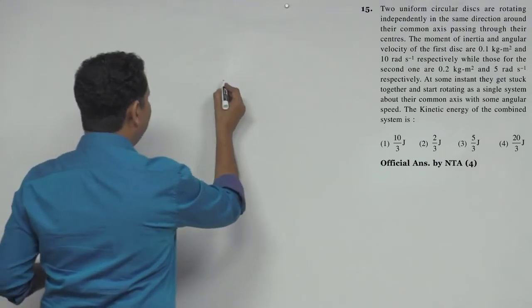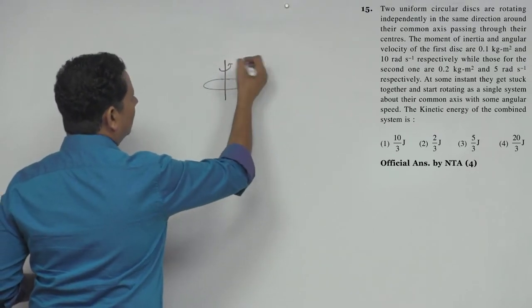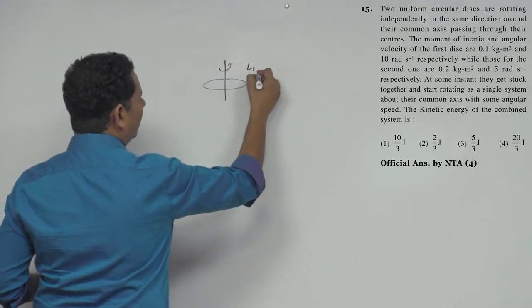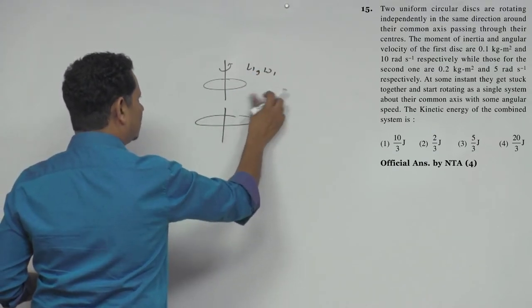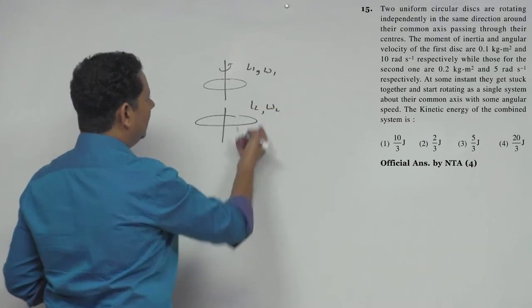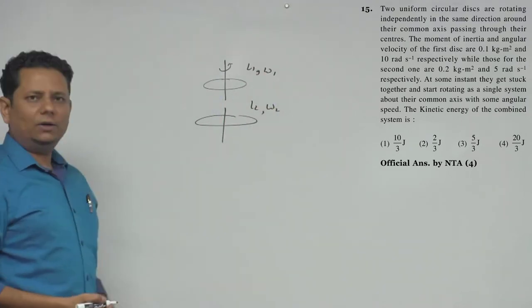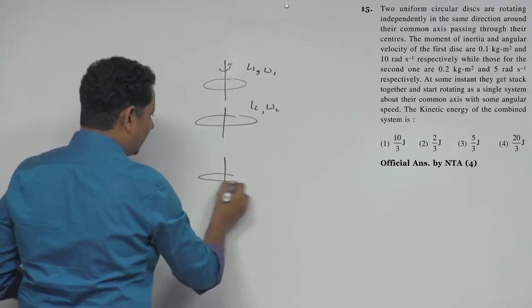You can see that one disc has angular momentum L1 and angular velocity omega 1. The second disc has angular momentum L2 and angular velocity omega 2. Now they are combined and both rotate together.